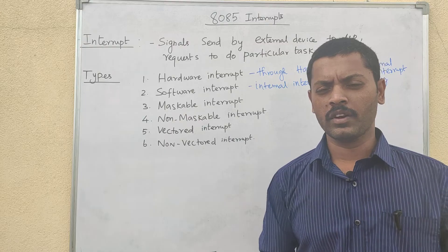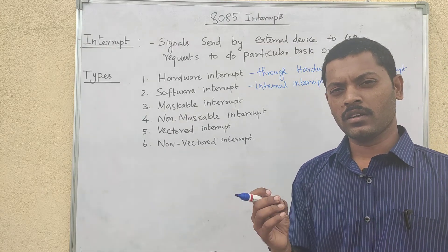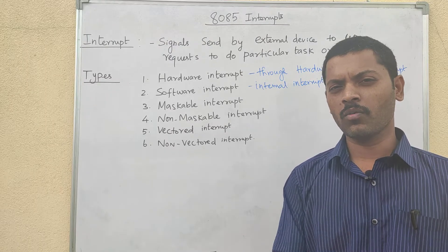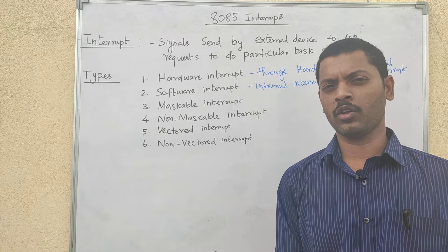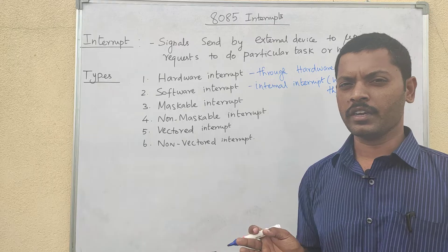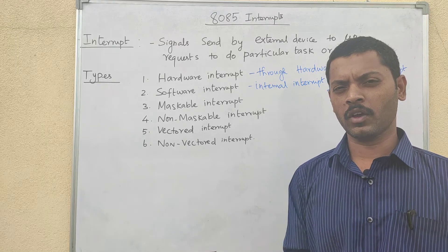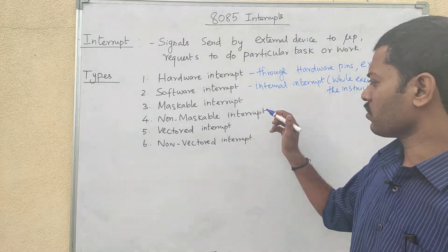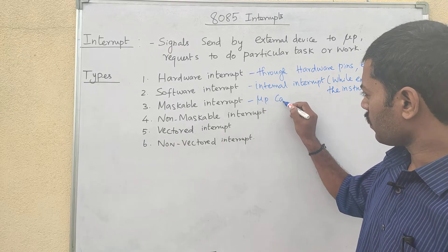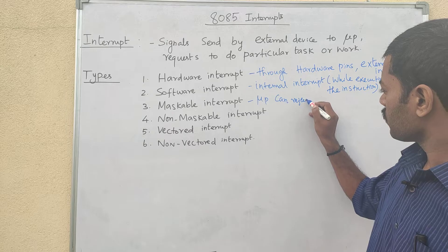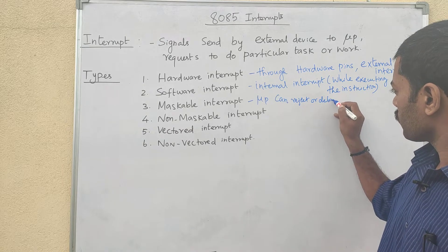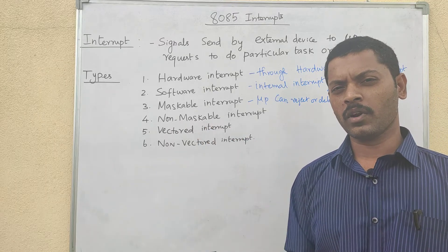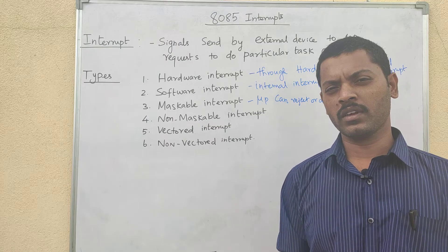Next is maskable interrupt. The interrupt signal is coming to the microprocessor. If the microprocessor is able to reject or delay the interrupt signals, it is a maskable interrupt. The microprocessor can reject or delay the interrupt.